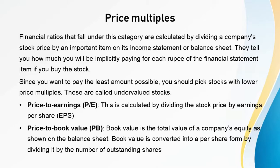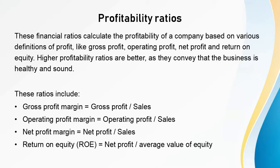Now let's look at profitability ratios. These financial ratios calculate the profitability of a company based on various definitions of profit like gross profit, operating profit, net profit, and return on equity. Higher profitability ratios are better as they convey that the business is healthy and sound. These ratios include: gross profit margin = gross profit / sales; operating profit margin = operating profit / sales; net profit margin = net profit / sales; and return on equity (ROE) = net profit / average value of equity.